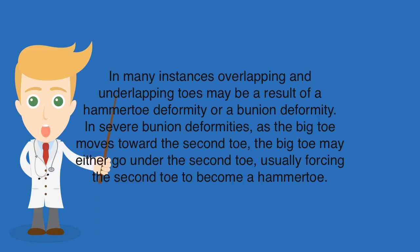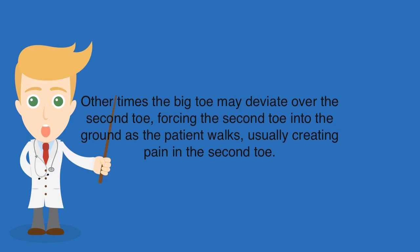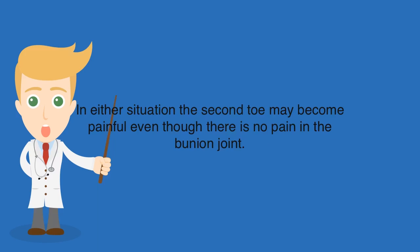In many instances overlapping and underlapping toes may be a result of a hammer toe deformity or a bunion deformity. In severe bunion deformities, as the big toe moves toward the second toe, the big toe may either go under the second toe, usually forcing the second toe to become a hammer toe. Other times the big toe may deviate over the second toe, forcing the second toe into the ground as the patient walks, usually creating pain in the second toe. In either situation the second toe may become painful even though there is no pain in the bunion joint.